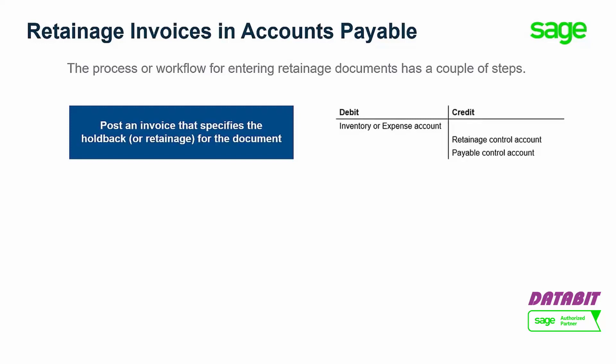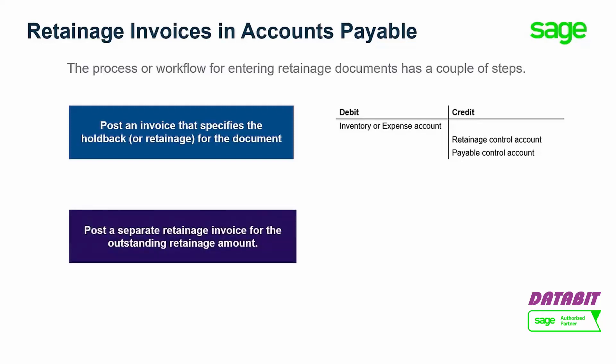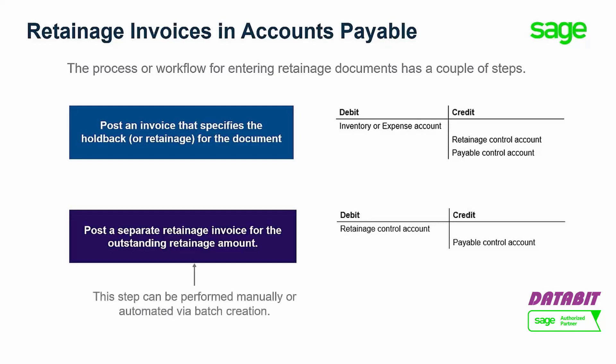The second step happens at a later time, and it is to post a separate retainage invoice or debit or credit note for the outstanding retainage amount. This transaction debits the retainage control account and credits the payables control account. This step can be performed manually or automated by a batch creation.